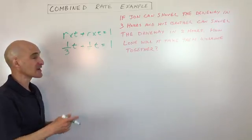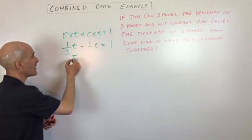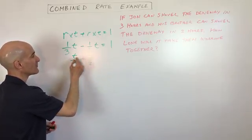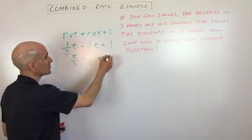Now, sometimes when you see it in your textbook, you might see it slightly differently. Like, they might have this as t over 3, plus t over 2, or it might even be x over 3 plus x over 2 equals 1.